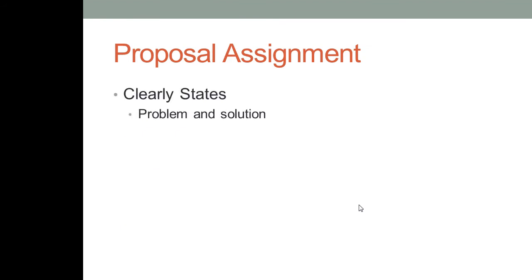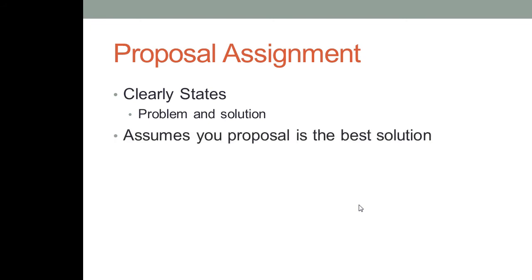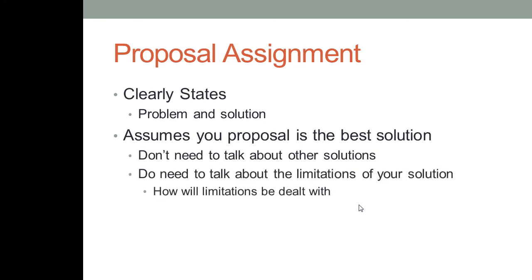The proposal assignment is sort of the follow-up to your feasibility report. First, you'll do the feasibility report and turn that in, and then you'll start working on your proposal assignment. The proposal assignment will also clearly state the problem and solution, although most of the time you won't need to justify it like you do with the feasibility report, because the proposal is basically already assuming that your proposal is needed and is the best solution. You don't need to talk about other solutions, but you do need to talk about limitations within your solution and how those things will be dealt with.